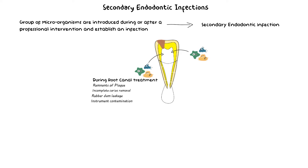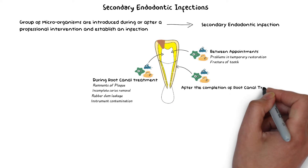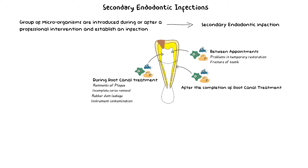Entry of bacteria can also occur between appointments of a procedure, perhaps due to loss or leakage of the temporary restoration, or fracture of the tooth. Finally, bacteria may enter after completion of root canal treatment through loss or leakage of the final restoration, during preparation of a post or any other intracanal restoration without rubber dam, tooth fracture after treatment, or a long delay in placing the permanent restoration. Because of these many possible routes, the species of these microorganisms may be oral or non-oral in origin.